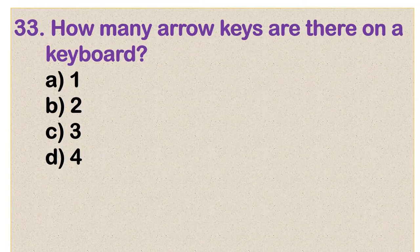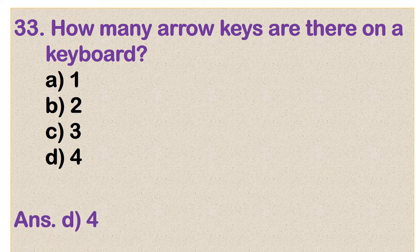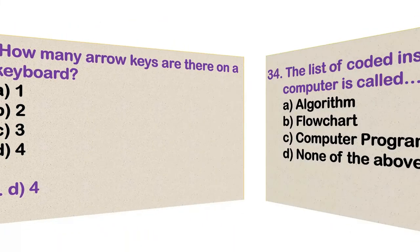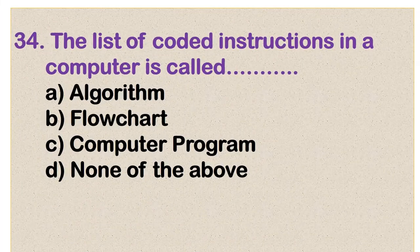Question number 33: How many arrow keys are there on a keyboard? Options are 1, 2, 3, and 4. The correct answer is option D: 4. There are 4 arrow keys on a computer keyboard.